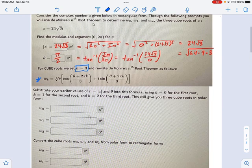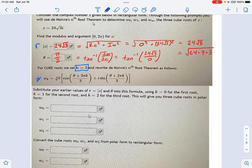And substitute in the r value, the theta value, and k equals 0, 1, or 2, depending on whether I want the first, second, or third root.